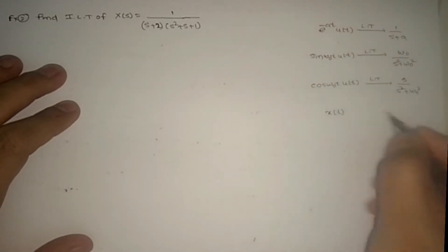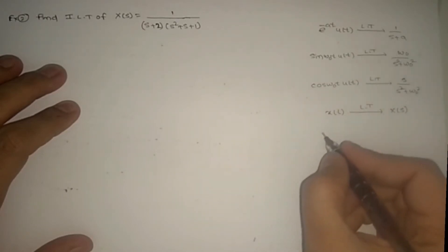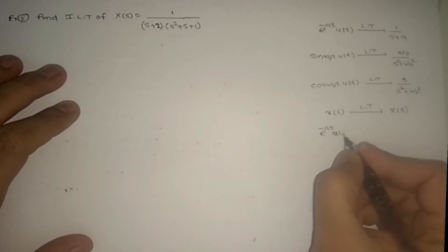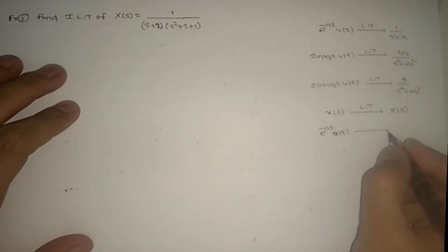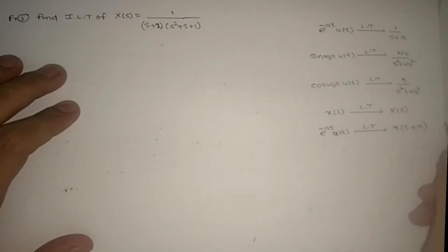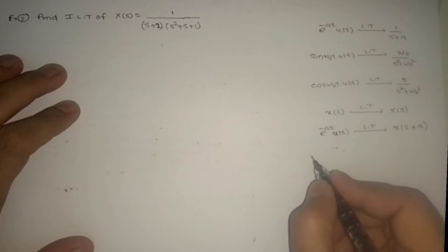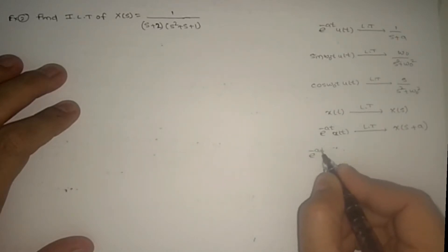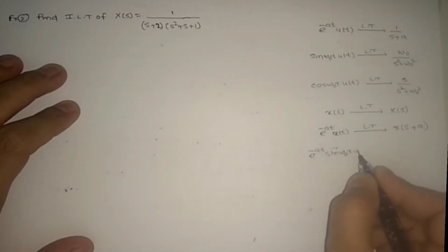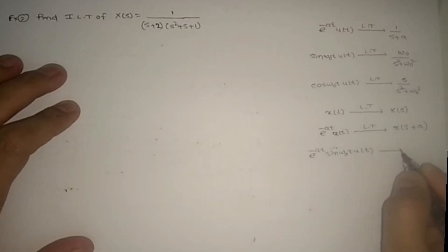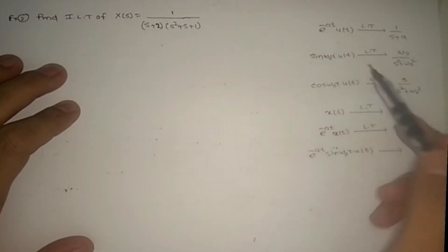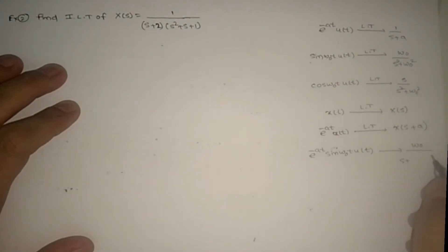We know x(t) has Laplace transform X(s). If you multiply e^(−at)·x(t), then the Laplace transform is X(s+a). Using this shifting property, e^(−at)·sin(ω₀t)·u(t) gives ω₀/[(s+a)²+ω₀²], wherever s appears we replace by (s+a).